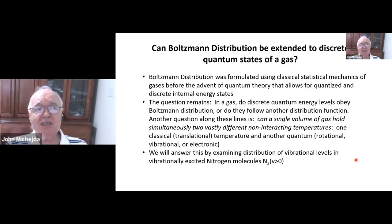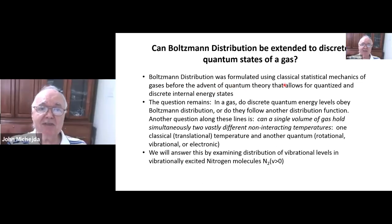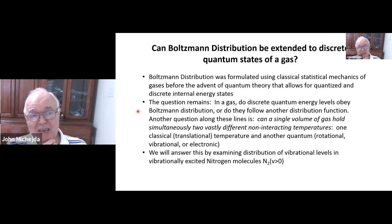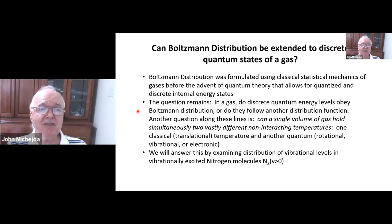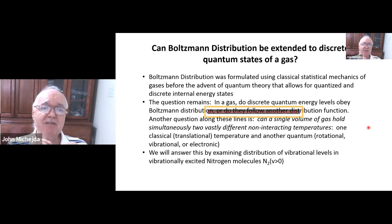Can the Boltzmann distribution be extended to discrete quantum states of gases? It was basically formulated using classical statistical mechanics, prior to quantum theory. One can rephrase the question: in a gas, do discrete quantum energy levels obey Boltzmann distribution, or do they follow another distribution function? One can also ask: can you have a single volume of gas which holds simultaneously two vastly different non-interacting temperatures — one classical translational temperature and one quantum temperature covering rotational, vibrational, and electronic states?